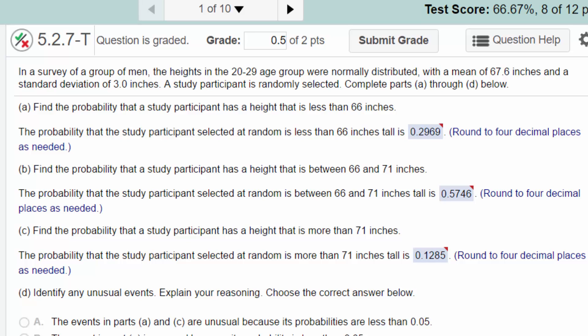This first problem says we've got a survey of men in the age 20 to 29, and the heights were normally distributed with a mean of 67.6 inches and a standard deviation of 3.0. So that's two important pieces of information. Remember, if we've got the mean and the standard deviation, we can describe the normal distribution for that particular population. First question is, find the probability that the study participant has a height less than 66 inches.